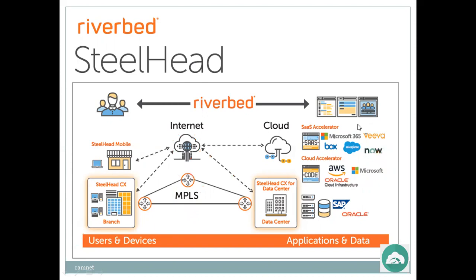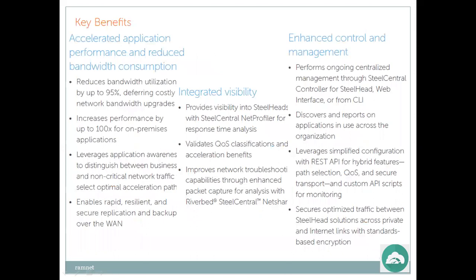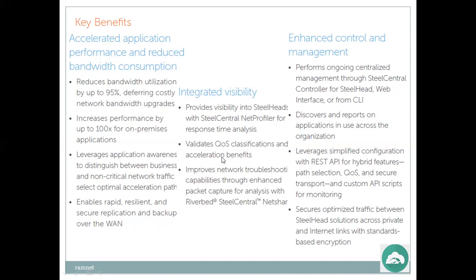Key benefits of Riverbed SteelHead: accelerated application performance; reduced bandwidth consumption by up to 95 percent — though proper tuning is required; avoids costly network bandwidth upgrades; increases performance by 100 percent on on-premises applications; leverages application awareness to distinguish between business-critical and non-critical network traffic; selects optimal acceleration path; enables rapid, resilient, and secure replication and backup; provides visibility into SteelHead with the SteelCentral Net Profiler for response time analysis.